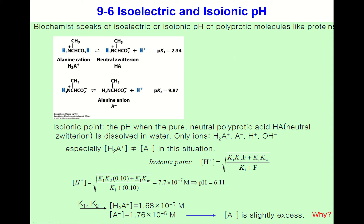Let's take the example of alanine. The fully protonated form is H2A+, and it dissociates to the neutral zwitterion. The neutral zwitterion also dissociates into the anion, which is the fully deprotonated form. pK1 is 2.34 and pK2 is 9.87.